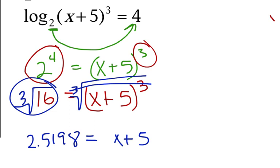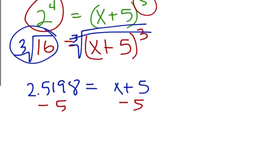So all I have to do to finish is just subtract 5, and that should give me x equals negative 2.48.